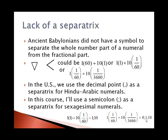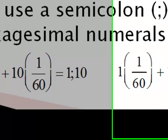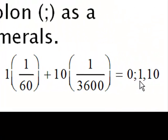In the United States, we use a decimal point as a separatrix to separate the whole number part from the fractional part. In this course, I'll use a semicolon as a separatrix for these sexagesimals. To indicate we've got 1 and 10 60ths, I'll put 1 semicolon 10. And to indicate we've got 1 60th and 10 3600ths, I'll have 0 semicolon 1, 10.